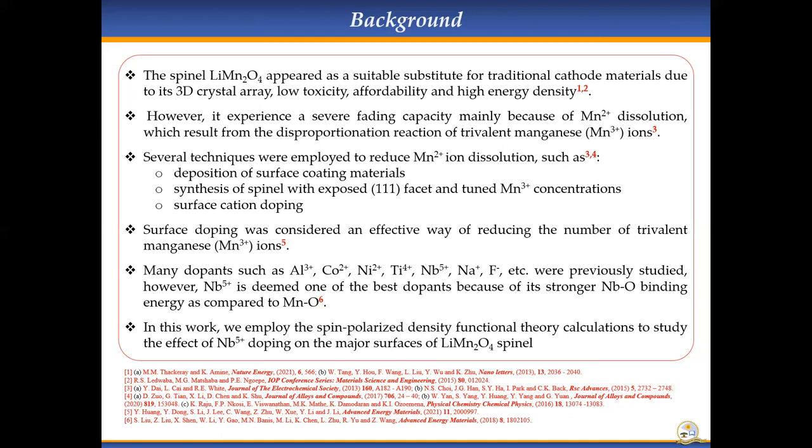Several methods have been used to reduce this manganese dissolution, which includes the deposition of surface coating material, the synthesis of spinel with exposed 111 surfaces and tuned trivalent manganese concentrations, and surface cation doping. Surface doping was considered the best way to reduce the number of trivalent manganese ions, and various dopants were already used which include aluminum, cobalt, nickel, titanium, niobium, sodium, and fluoride.